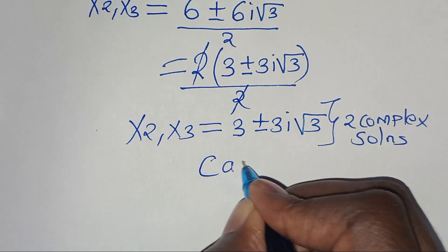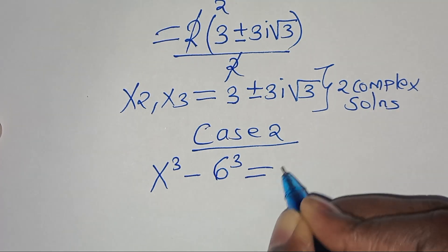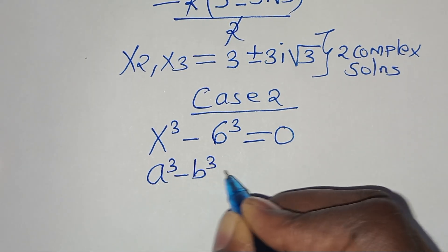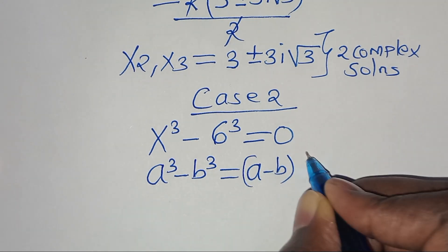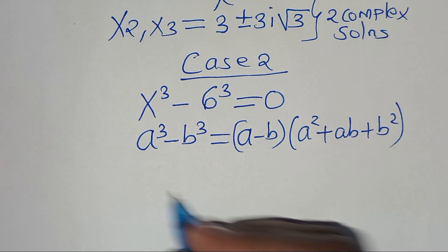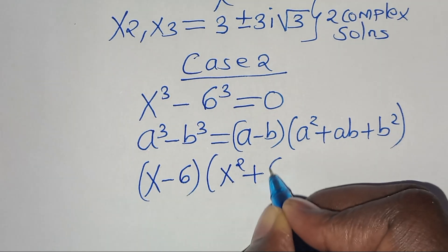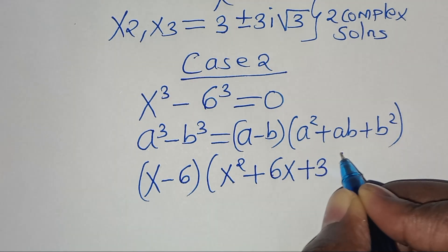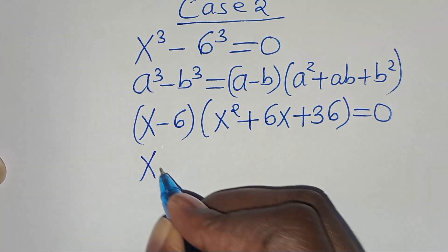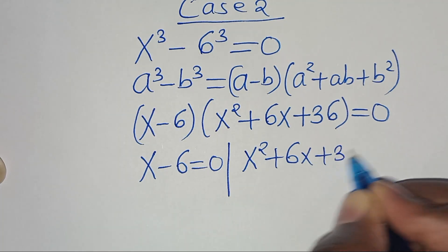Let's proceed to Case 2: x^3 minus 6^3 equals 0. This is the difference of two cubes, which we express as (a^3 - b^3) = (a - b)(a² + ab + b²). Applying this identity, we have (x - 6)(x² + 6x + 36) equals 0. So we have two parts: x minus 6 = 0, and x² + 6x + 36 = 0.